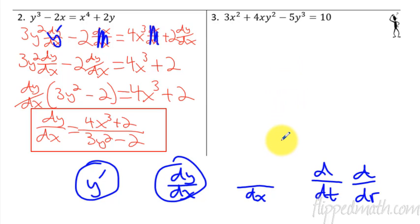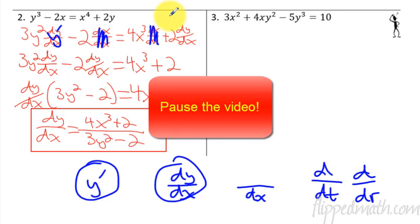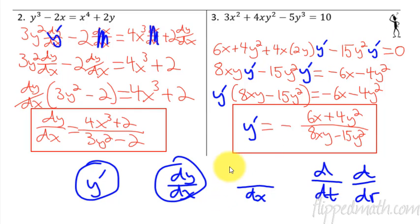Try number 3. Pause this video now and try this one on your own — and don't forget to use the product rule. Here's our answer. I put the negative here; I factored it out of the numerator, so you're going to have negative 6x plus 4y squared all over 8xy minus 15y squared. I made the y prime in blue with different colors so you can visually keep track of it. That's where we would normally put a dy/dx.